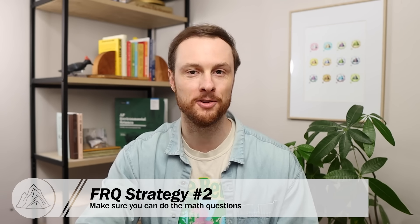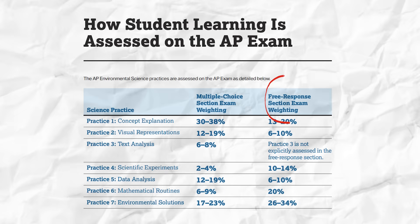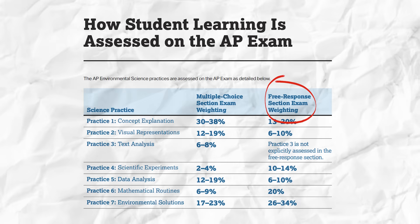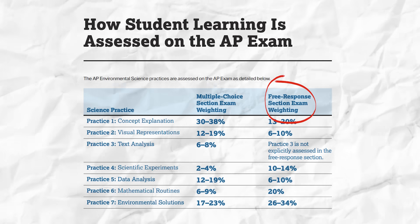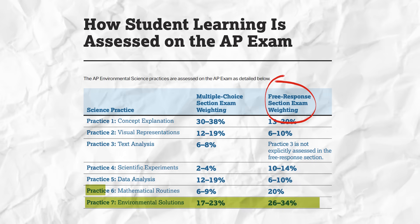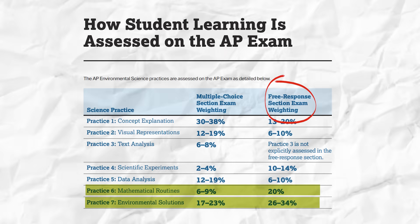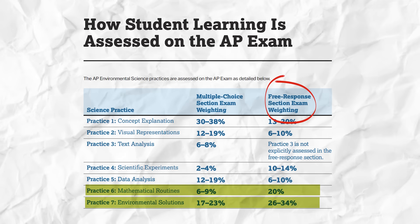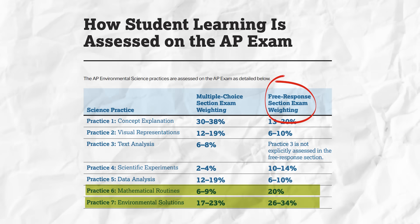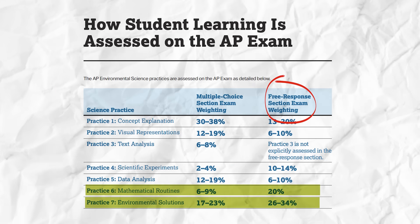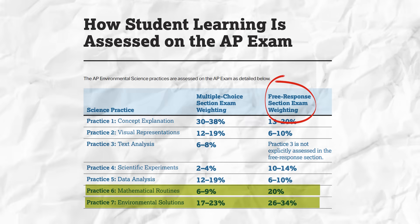The second really important piece of FRQ strategy is that you have to be able to do the types of calculations you'll see on the third FRQ. If we look at the FRQ section exam weighting, we can see that the two biggest categories are environmental solutions and mathematical routines. Six out of the 30 points — or 20% of the points on the FRQ section — will be math-based. And if you know how to do these types of problems, these are relatively easy points to earn.